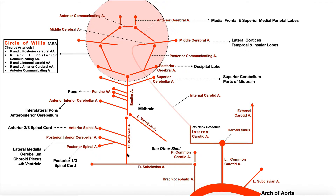The vertebral arteries travel through the intervertebral foramina of the cervical spine, rise above the atlas C1, and move into the cranium. Once inside, they converge — the left and right vertebral arteries fuse to form the basilar artery. The basilar artery is a single artery with no left or right, sitting in the midline.